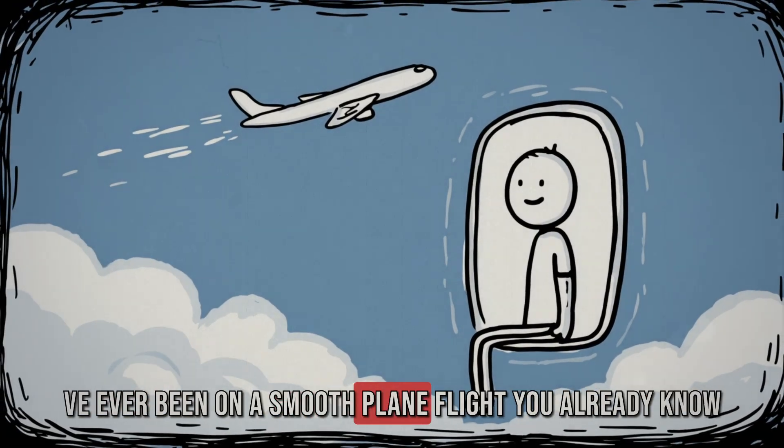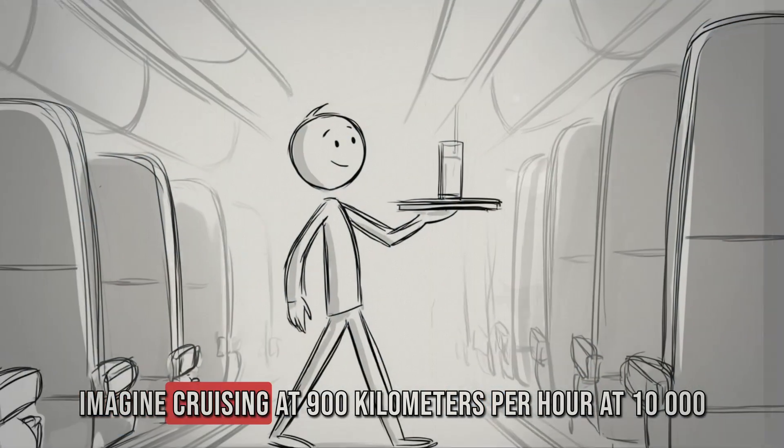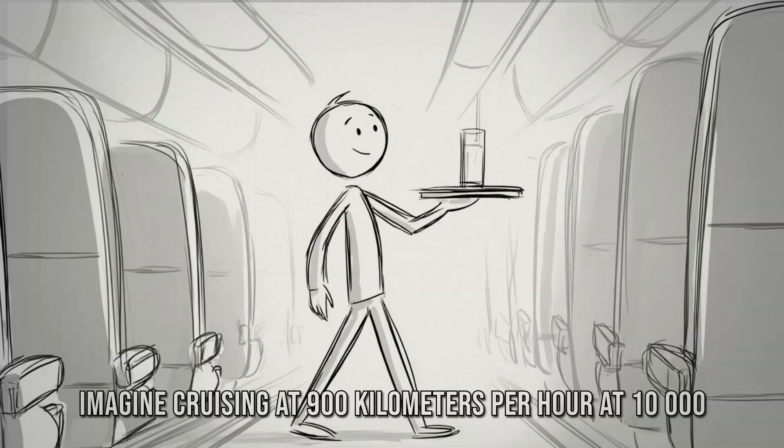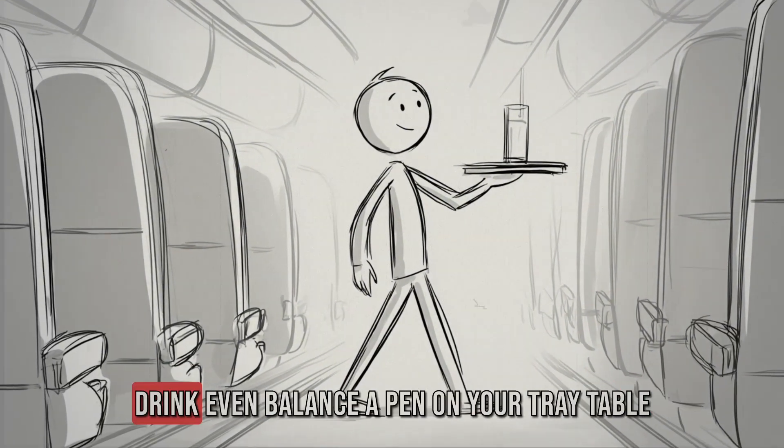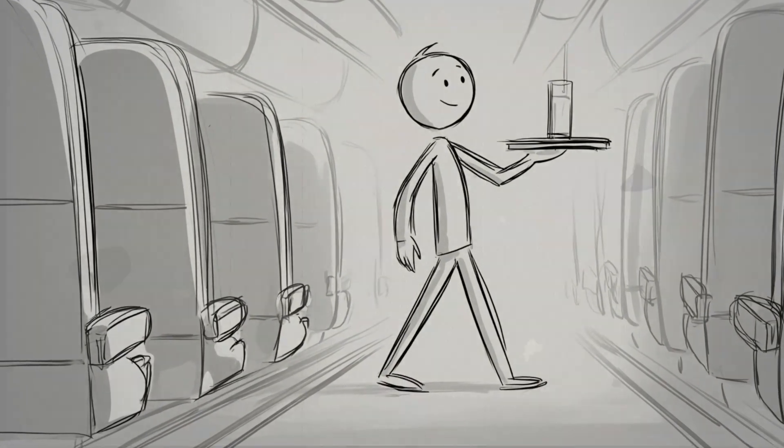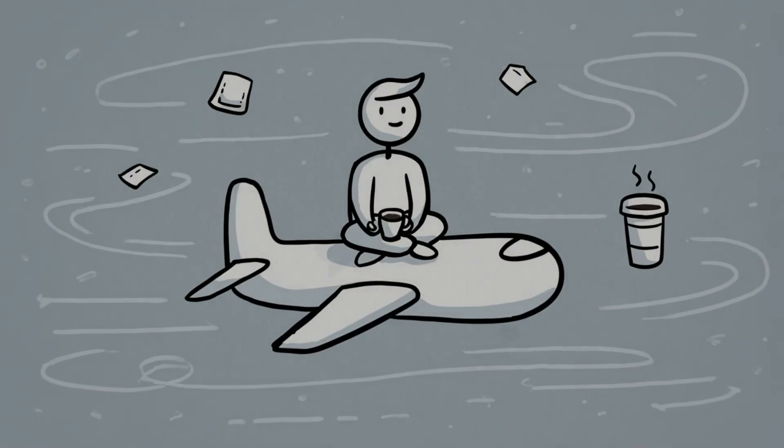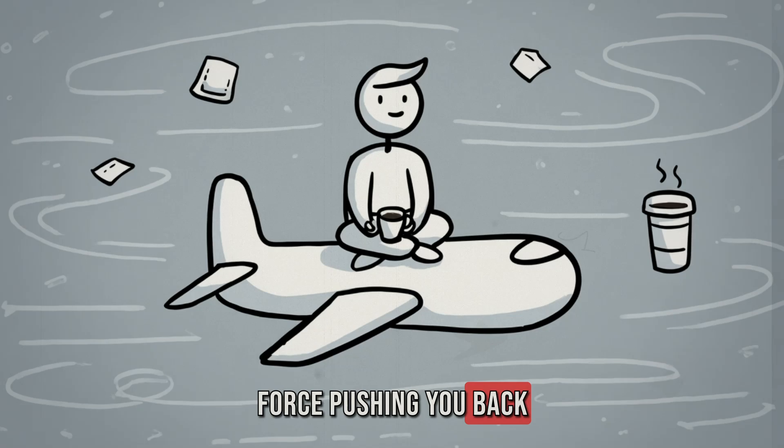If you've ever been on a smooth plane flight, you already know what this feels like. Imagine cruising at 900 kilometers per hour at 10,000 meters altitude. You can walk down the aisle, pour a drink, even balance a pen on your tray table. Why? Because you're moving at the same speed as the plane. You're inside the system. There's no wind hitting you, no force pushing you back.